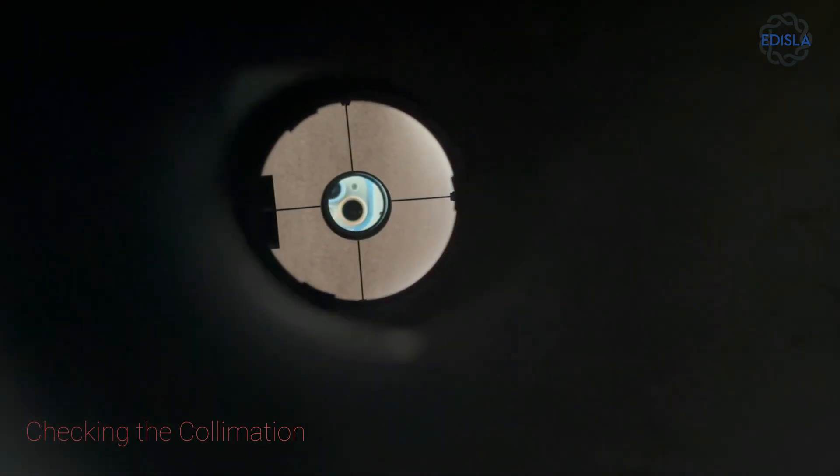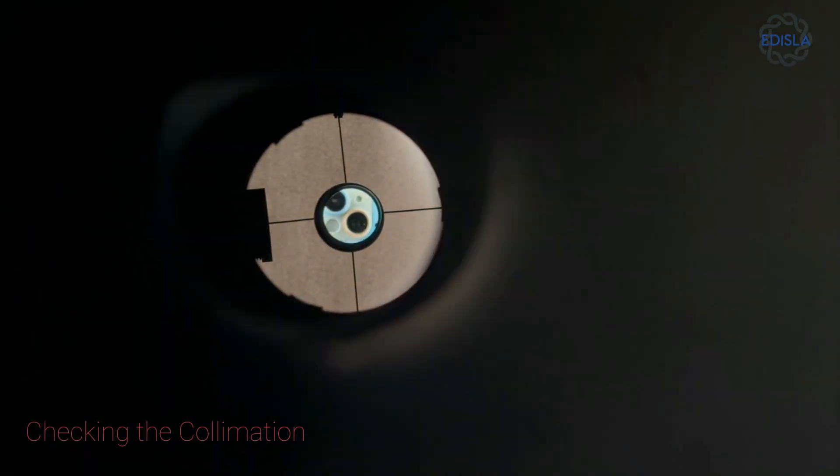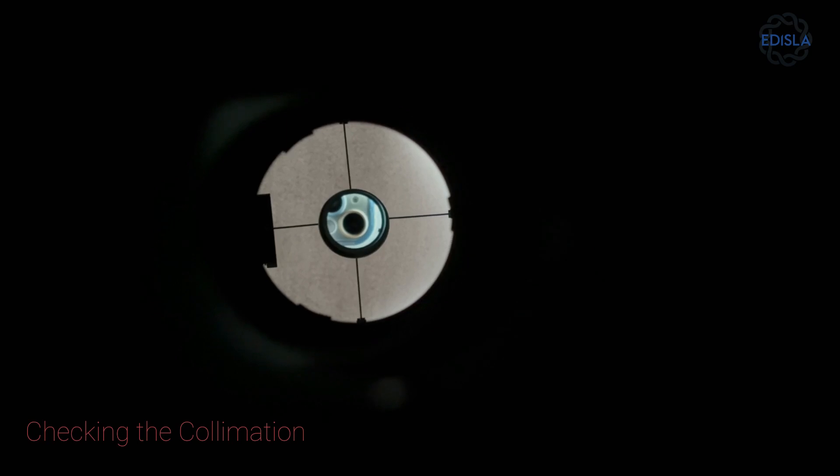If you notice slight shifts in the image when changing your viewing angle, that's completely normal, as long as the view resembles this pattern. If it looks like this, your Astra is in good shape and no adjustments are necessary.